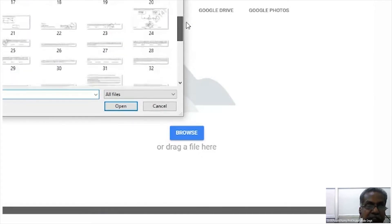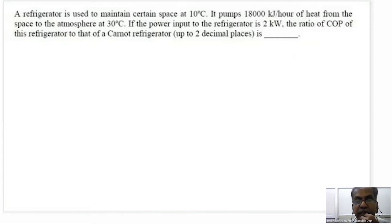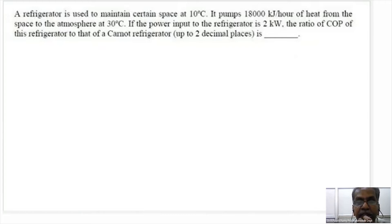A refrigerator is used to maintain a certain space at 10 degrees centigrade. It pumps 18,000 kilojoules per hour of heat from the space to the atmosphere at 30 degrees centigrade. If the power input of the refrigerator is 2 kilowatt, find the ratio of the COP of the refrigerator to the Carnot COP.